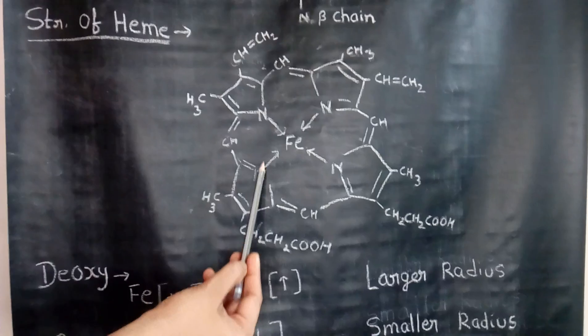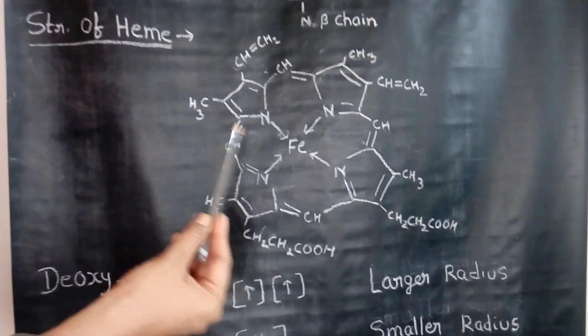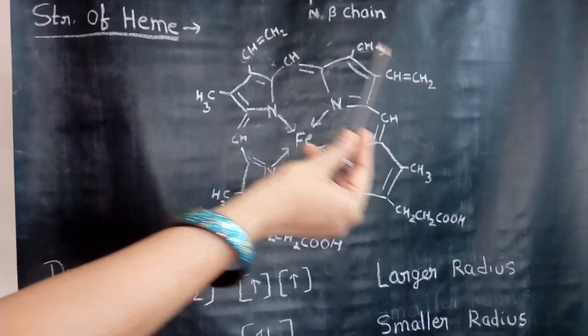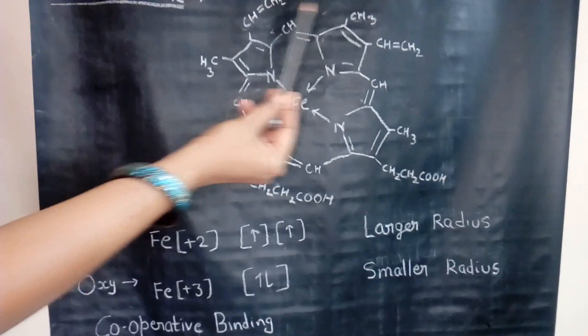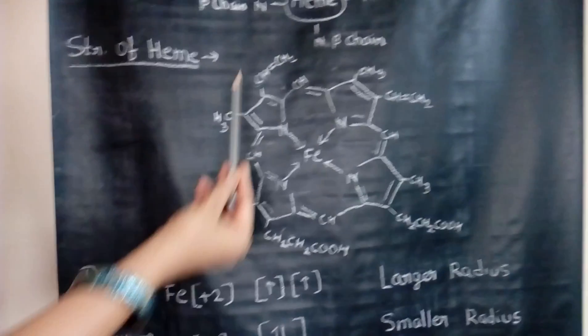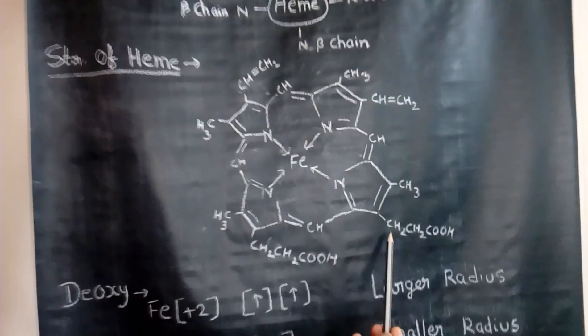The nitrogen atoms of the pyrrole groups are coordinated to the iron atom. There are various substituents present at the end of the pyrrole rings. These are methyl groups and these are vinyl groups and these are propionic acid groups.